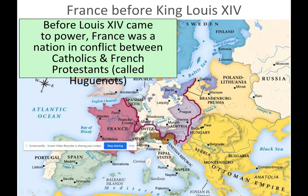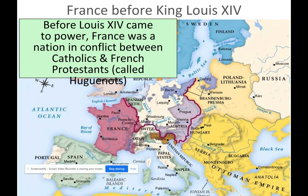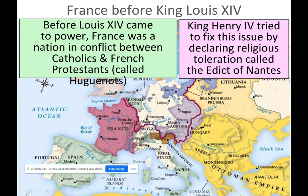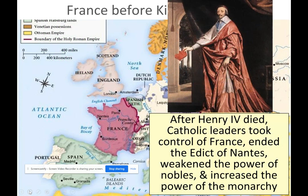Before Louis came to power, France was in conflict between Catholics and French Protestants called Huguenots. King Henry tried to fix this by declaring religious toleration through the Edict of Nantes. But after he died, Catholic leaders took control over France and ended the Edict of Nantes, which weakened the power of the nobles and increased the power of the monarchy.